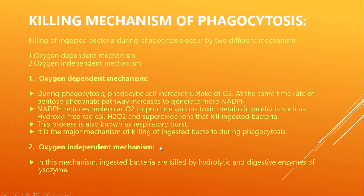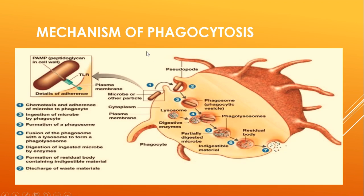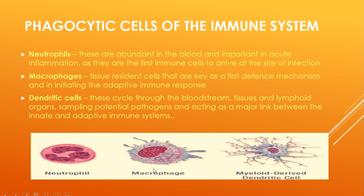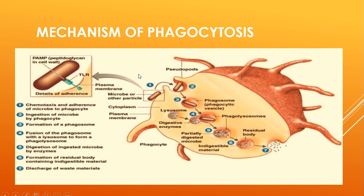The second killing mechanism is oxygen-independent, carried out by enzymes. The lysosome fuses with the phagosome forming a phagolysosome, and the hydrolytic and digestive enzymes within the lysosome break down the bacteria, partially digesting and killing them. The killed material is then thrown outside the macrophage or phagocytic cell. This is the complete phagocytosis process, covering phagocytic cell types — neutrophils, macrophages, and dendritic cells — the mechanism of phagocytosis, and the killing process.